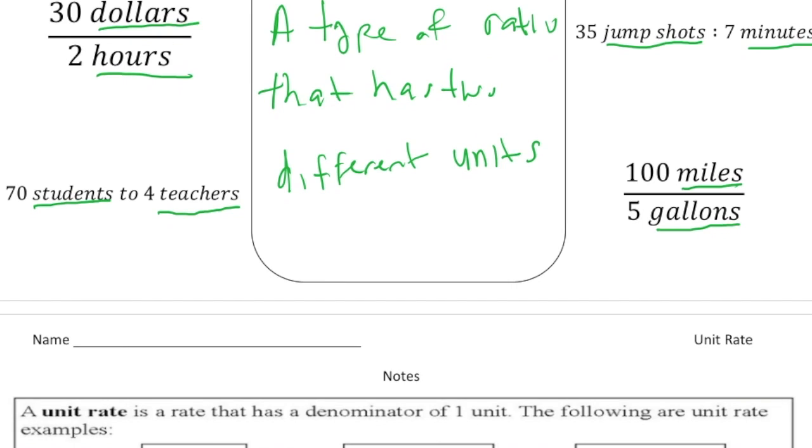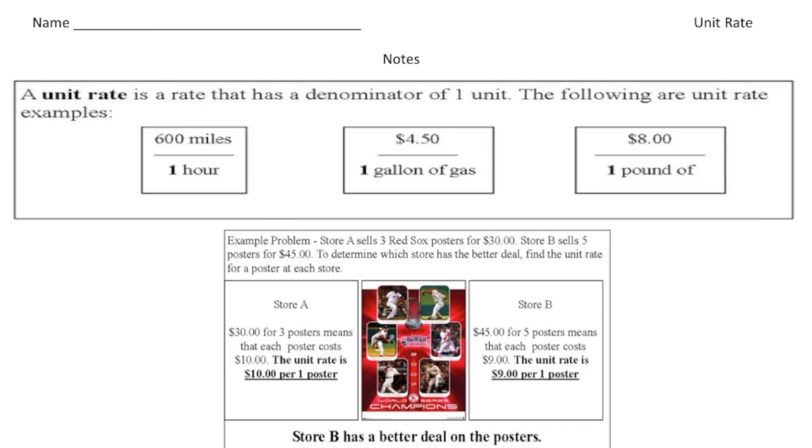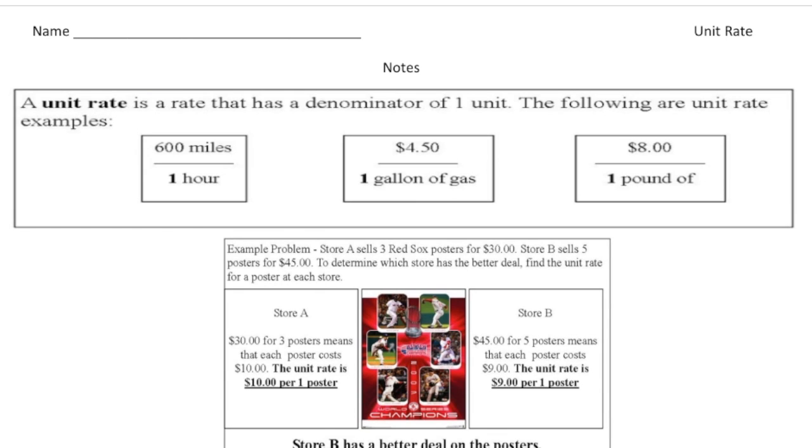So now let's turn the page and let's talk about unit rate. Unit rate is used a lot out there in the real world. So unit rate is a rate that has a denominator of one unit. Would you please underline that one? That's key. Actually, let's box that in. It has a denominator of one unit. The following are examples of unit rate. So 600 miles in one hour. Maybe that's how fast an airplane flies. $4.50 for one gallon of gas, or $8 for one pound of say hamburger.